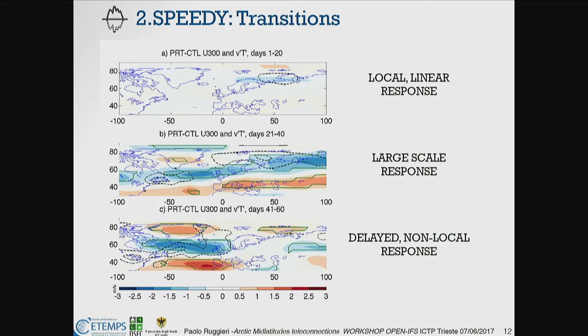Looking at the 300 hectopascal zonal wind in colours and transient eddy heat fluxes V'T' in shadings: at the beginning the response is essentially confined in the surroundings of the heating region — essentially linear and a heat flow. Then after a while the jet in the mid-latitudes is perturbed. Eddies tend to compensate the heating in the warming area, but there is also an indication of a reduction of eddy activity in the region associated with the North Atlantic storm tracks. In February, the signal is essentially confined in the North Atlantic where it persists and is basically a negative NAO.